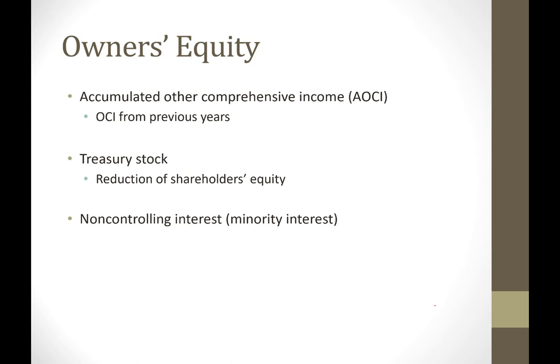That's our owner's equity. We talked about treasury stock. Other comprehensive income from previous years — the correct title is accumulated other comprehensive income. It's like the retained earnings of our comprehensive income. We even did a numeric example of how we would deal with available-for-sale securities and how that would flow into OCI. Treasury stock is a reduction of stockholders' equity.